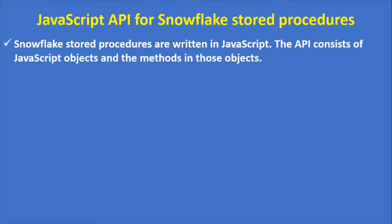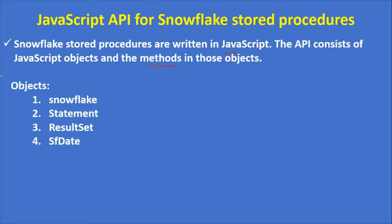Snowflake stored procedures are written in JavaScript. The API — Application Program Interface — consists of JavaScript objects and the methods in those objects. Snowflake provides four types of objects from the JavaScript API: the first is Snowflake, second is Statement, third is ResultSet, and fourth is SFDate.